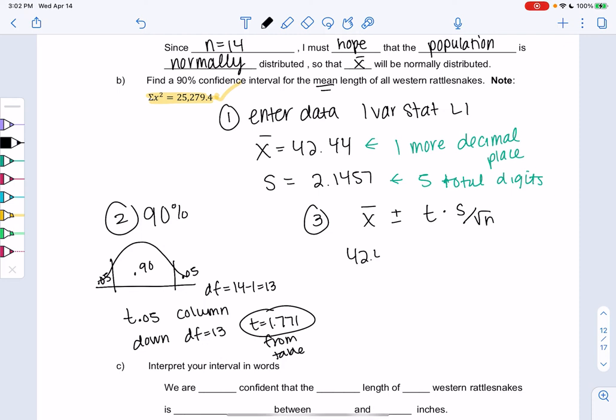So we'll take that 42.44. Right, our average goes in the middle of our interval. And then we add and subtract the error on the left and the right side. So 1.771. We're going to multiply by the standard deviation. And divide by the square root of 14.